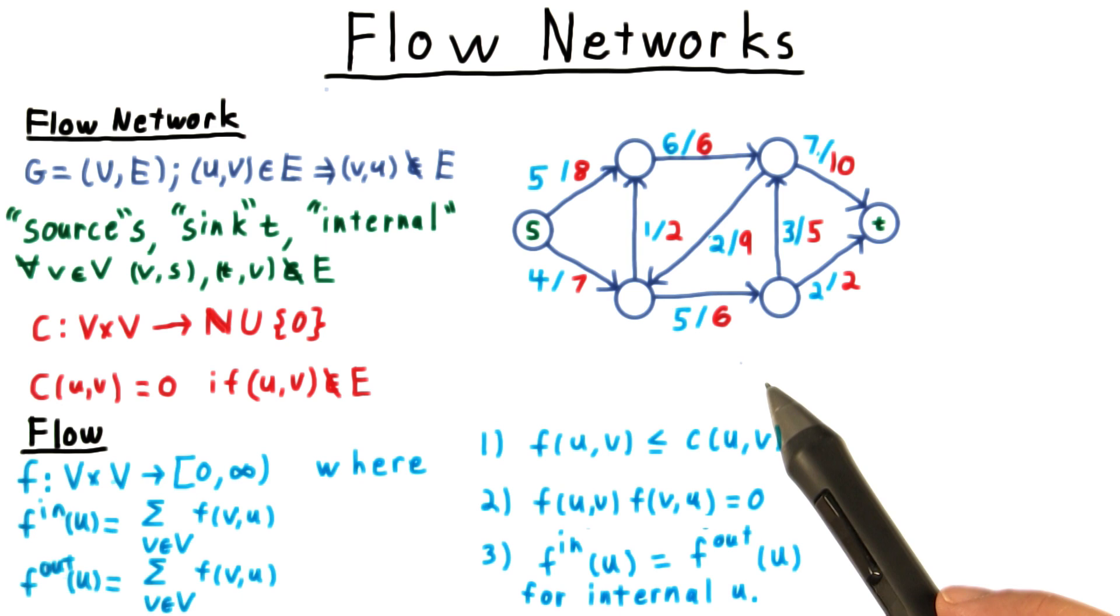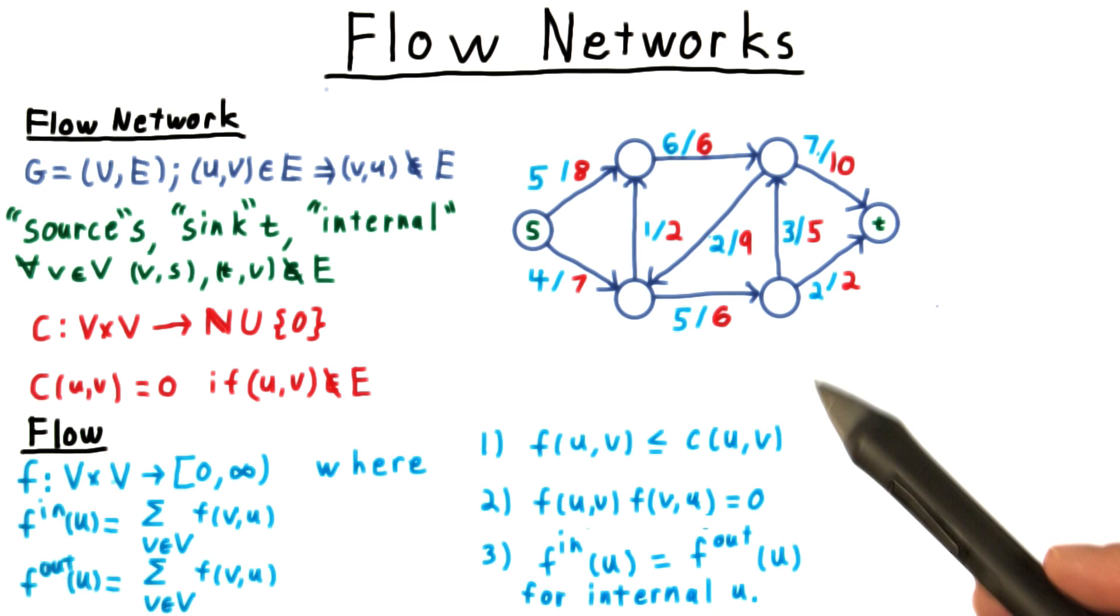Intuitively, this just means that internal nodes can't generate or absorb any of the stuff that's flowing. Those are the jobs of the source and of the sink.